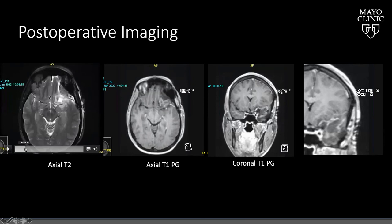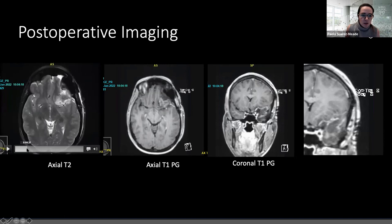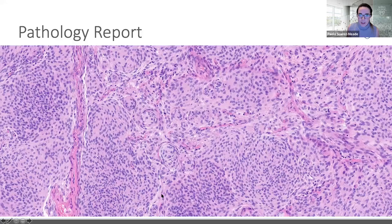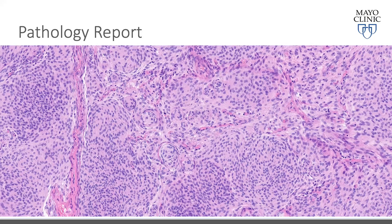The objectives of the surgery were achieved: no vascular injury, and the optic nerve was preserved throughout the procedure. Pathology report: a very classic meningioma with meningothelial cells, ovoid nuclei, no mitotic activity, and multiple meningothelial whorls — WHO grade 1 meningioma.